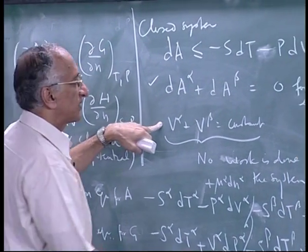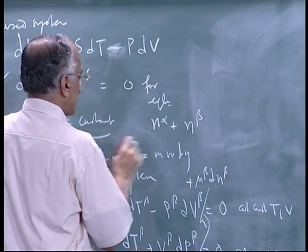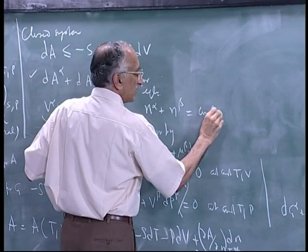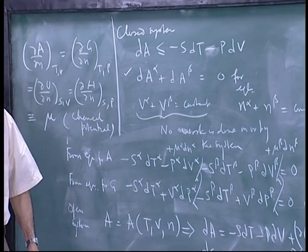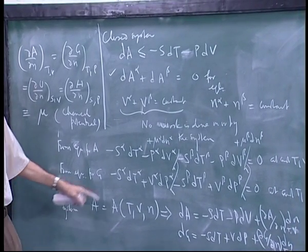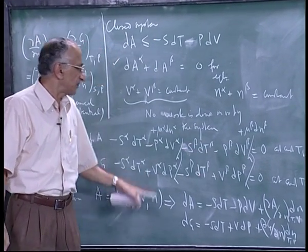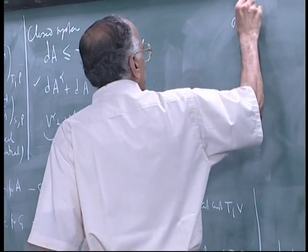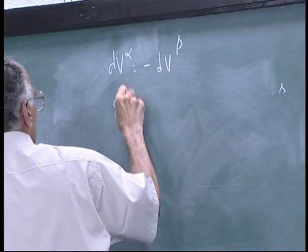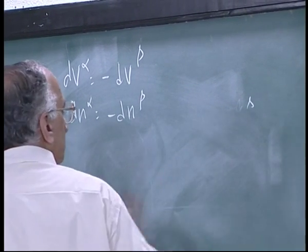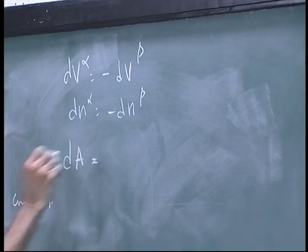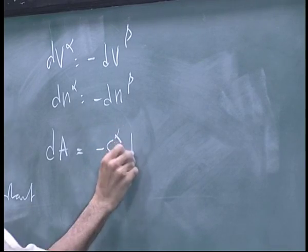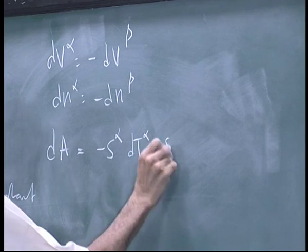We have one more constraint because V_alpha plus V_beta is constant, and because it is a closed system the total number of moles is conserved: N_alpha plus N_beta is constant. Therefore in these equations dV_alpha equals minus dV_beta, and dN_alpha equals minus dN_beta. So dA for the whole system is minus s_alpha·dT_alpha minus s_beta·dT_beta.